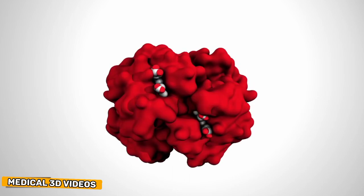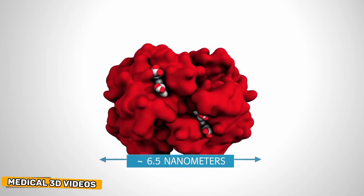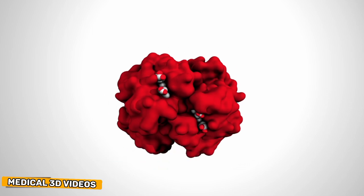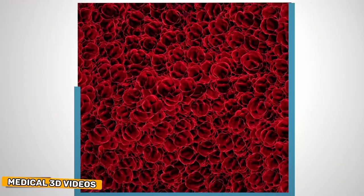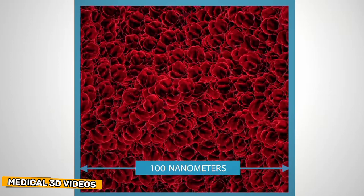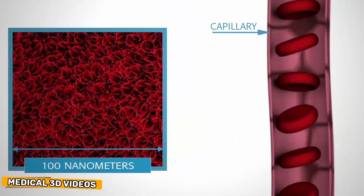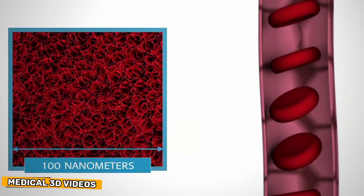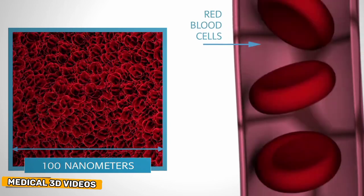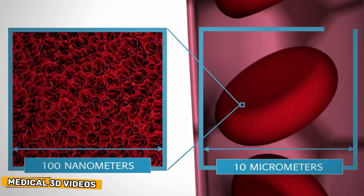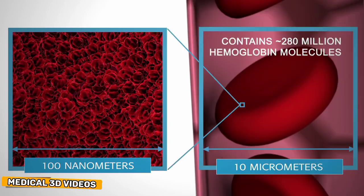Most proteins are smaller than the wavelength of light. For example, the hemoglobin molecule is about 6.5 nanometers in size. Hemoglobin is found in high concentration in red blood cells. A typical red blood cell contains about 280 million hemoglobin molecules.